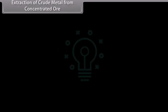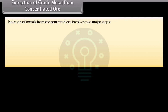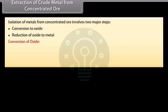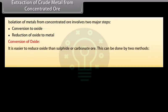Extraction of crude metal from concentrated ore. Must be converted into a form which is suitable for reduction. Oxides are easier to reduce. Thus, isolation of metals from concentrated ore involves two major steps: Conversion to oxide and reduction of oxide to metal. Conversion of oxide: It is easier to reduce oxide than sulphide or carbonate ore. This can be done by two methods: Calcination and roasting.